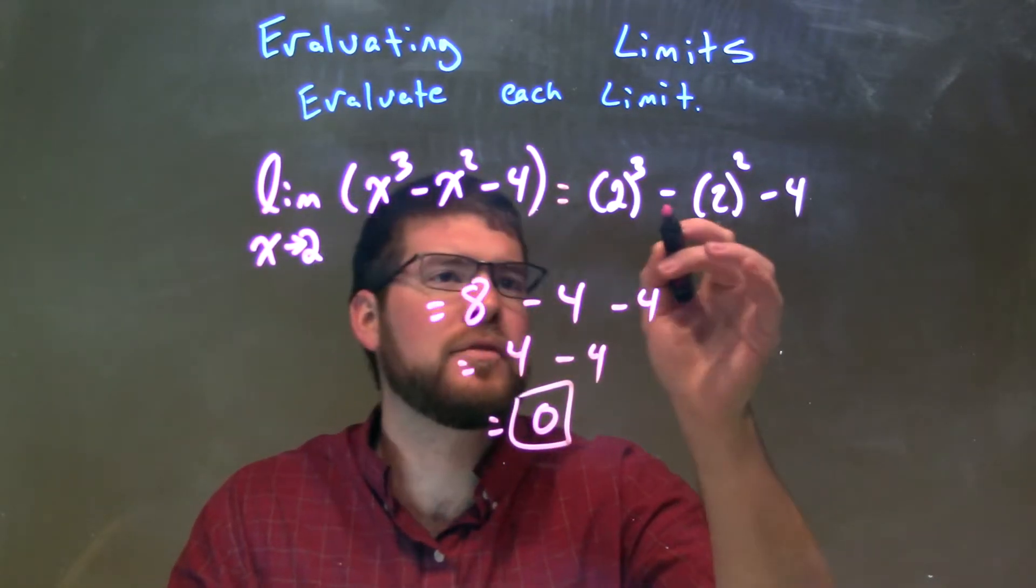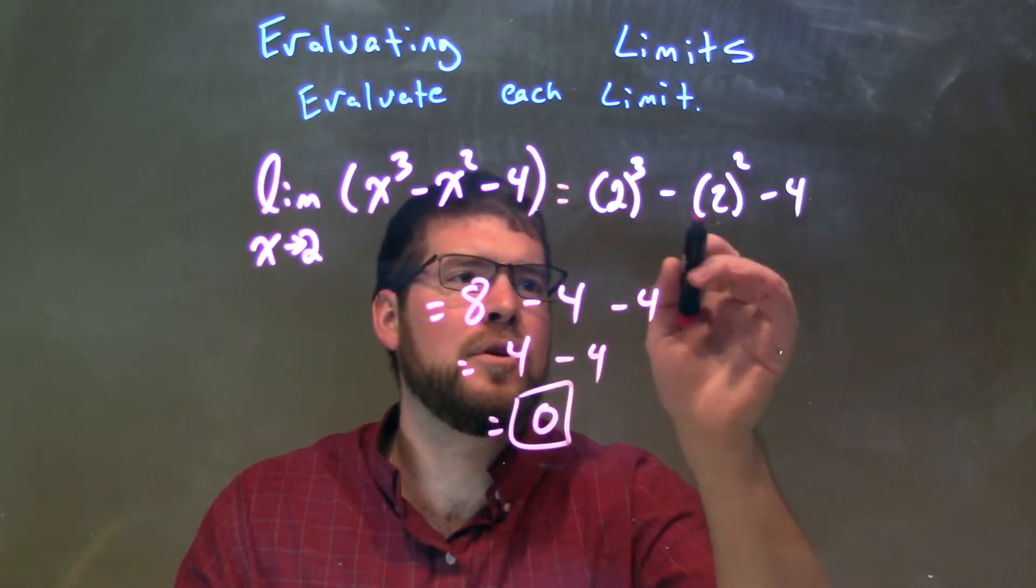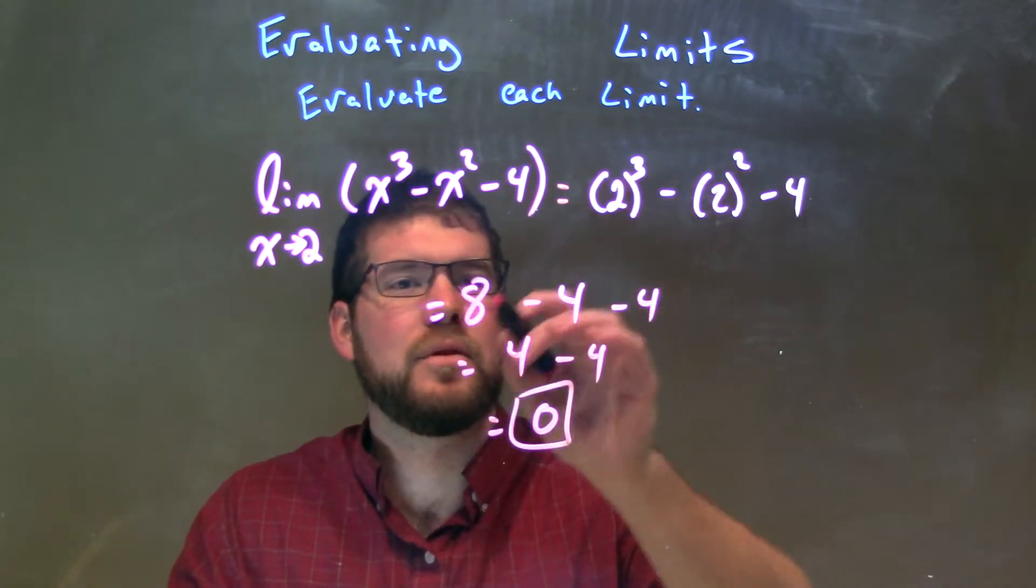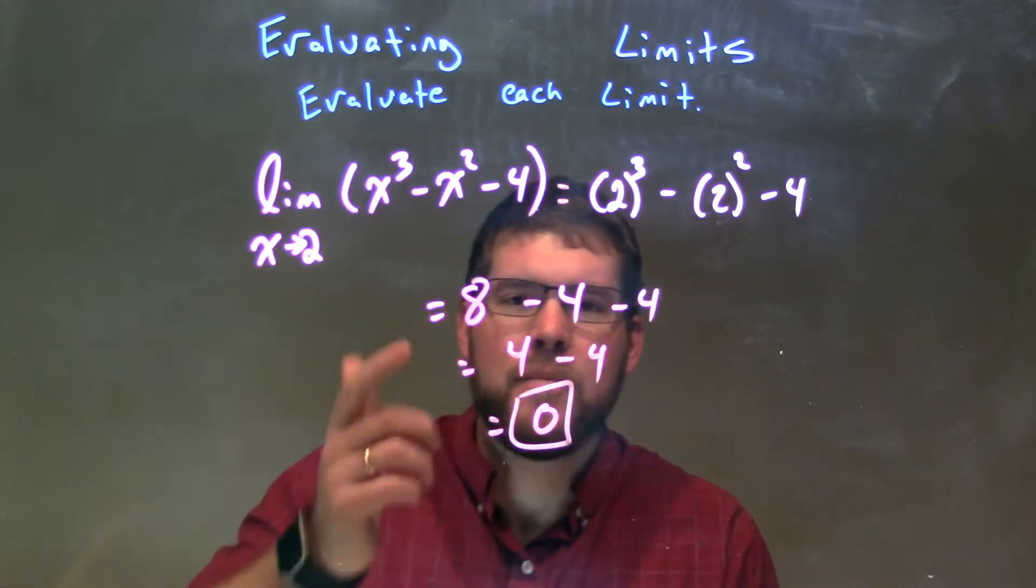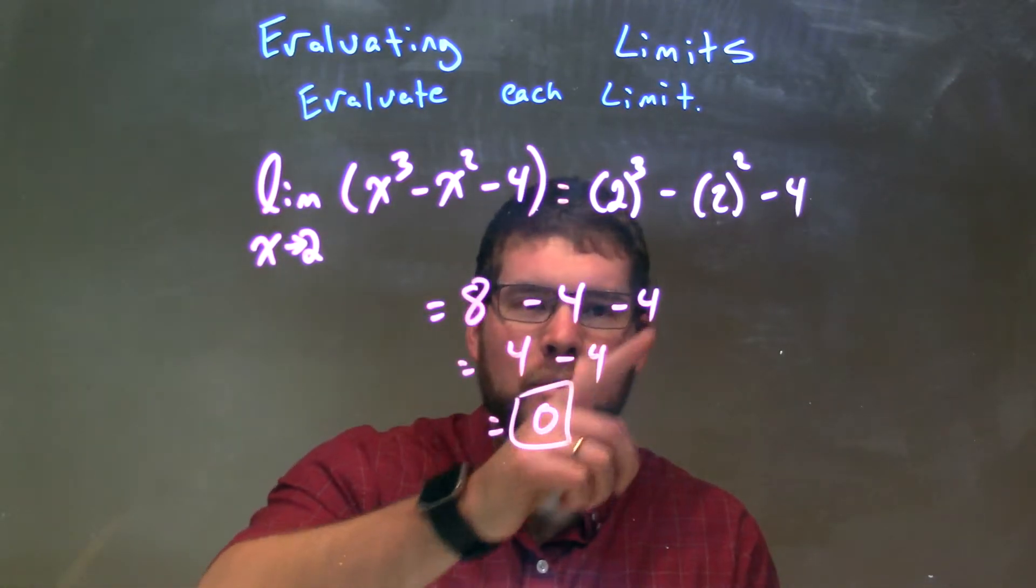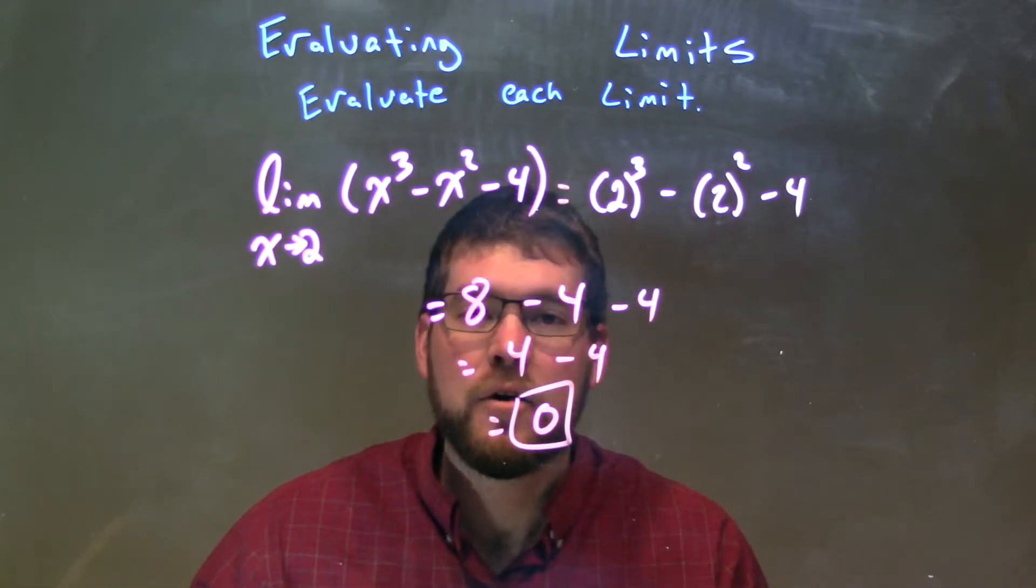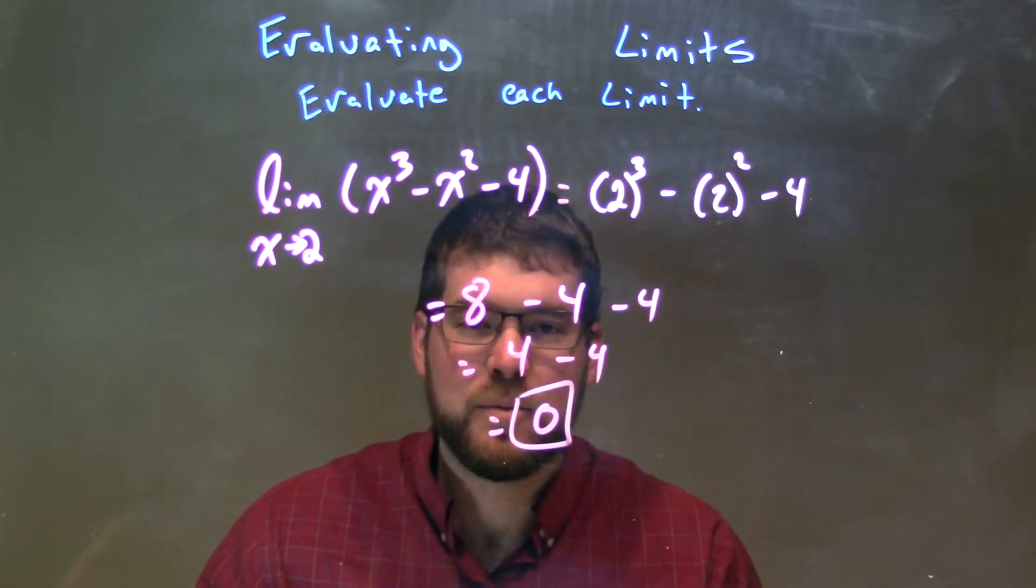We plug 2 in for x, for both x's. We have 2³ - 2² - 4. We simplify that: 2³ is 8, 2² is 4, and then 4 comes down. 8 minus 4 is 4, and 4 minus 4 is 0. So again, this limit is equal to 0.